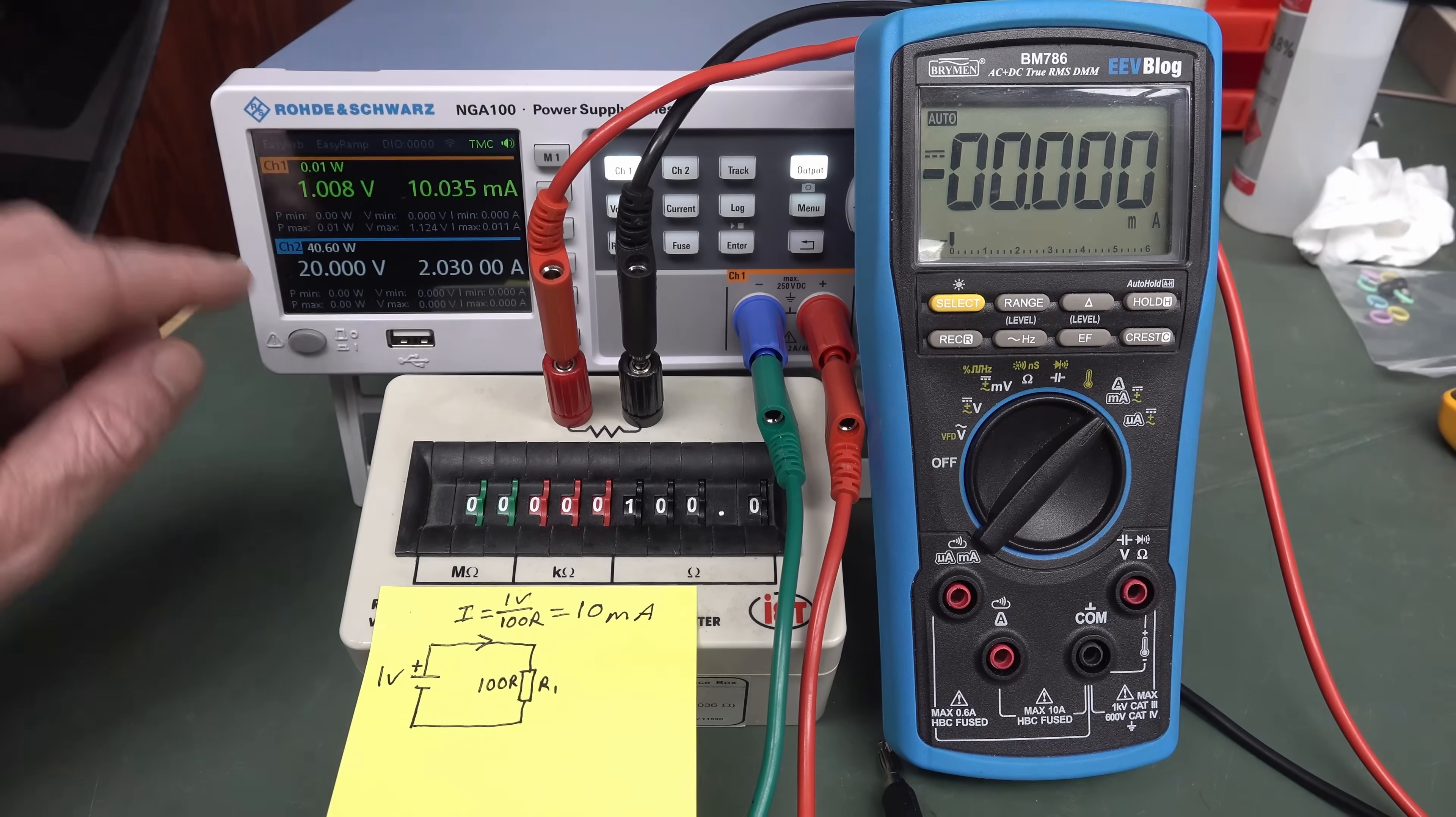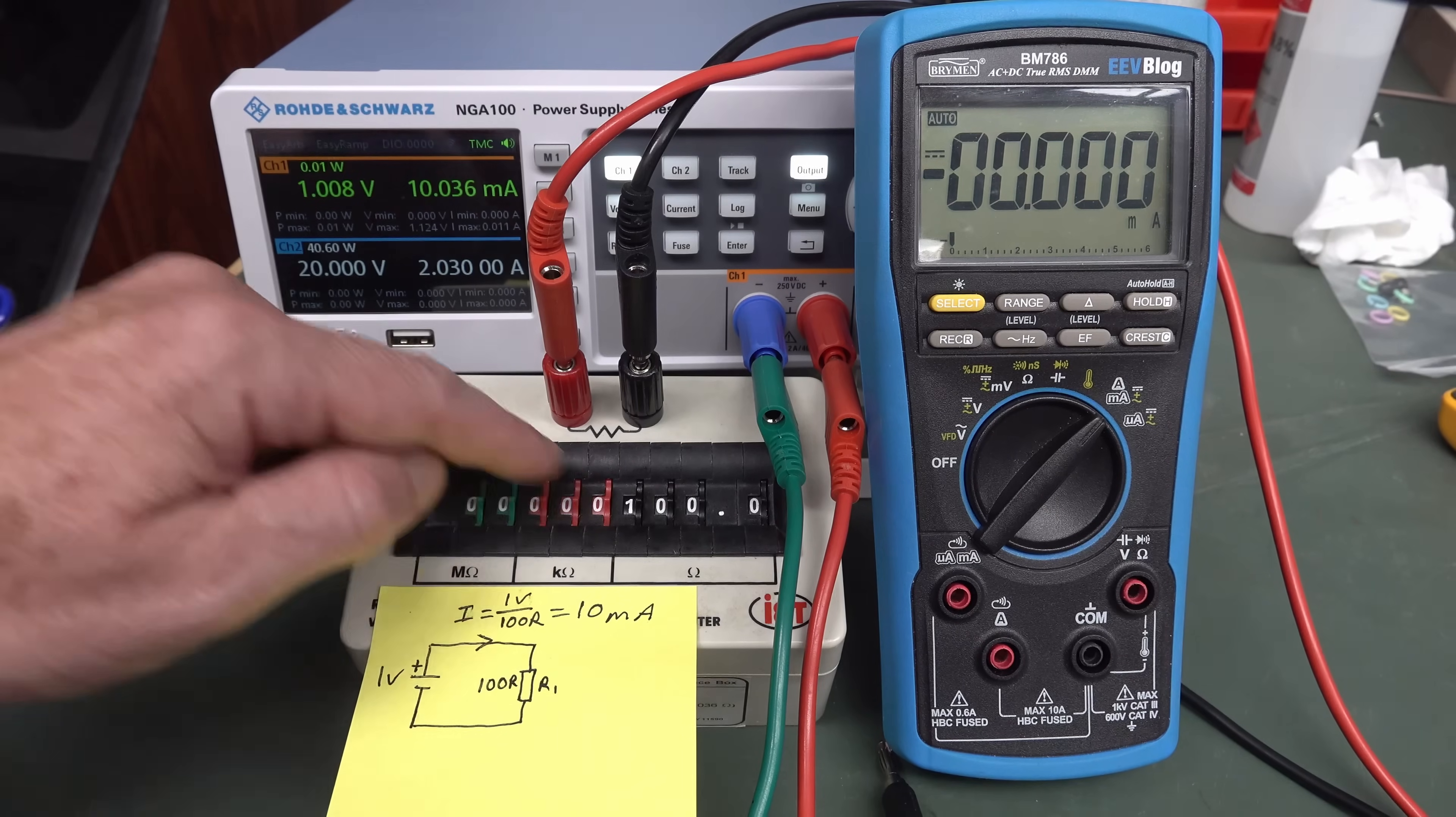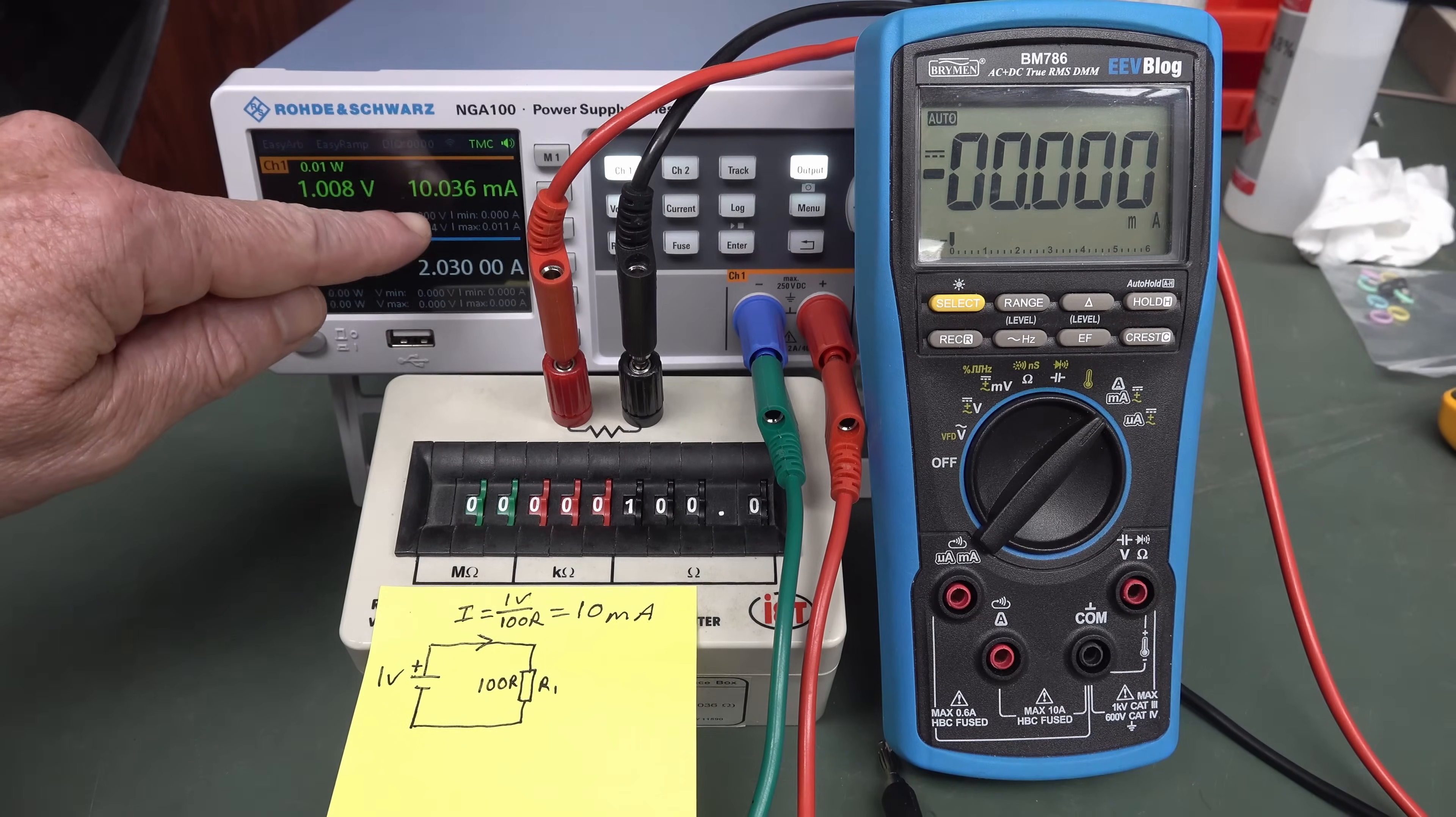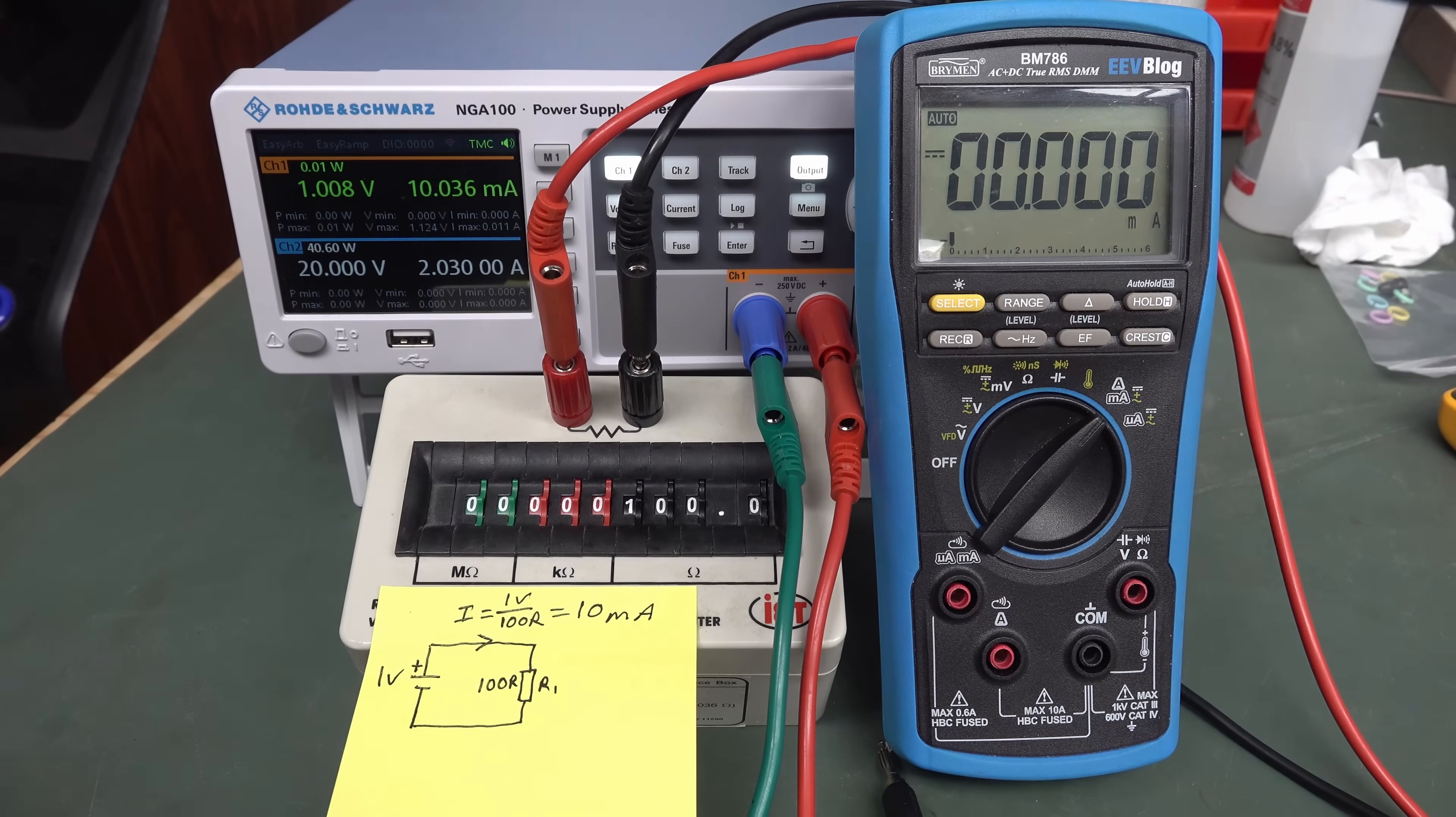I've got my power supply here outputting one volt. I've got a 100 ohm resistor directly across it. Ohm's law, current equals voltage over resistance, so one volt divided by 100 ohms gives you a current of 10 milliamps. And that's exactly what we're reading here. 10 milliamps, no problems whatsoever.